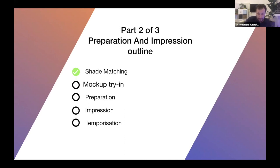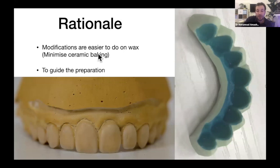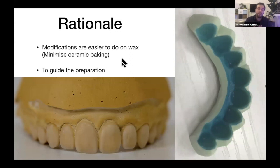Next, the mock-up try-in. Why do we do it? After the digital smile design from the last webinar, we make a wax-up and convert it into a putty because it's easier to make modifications on wax and composite than on ceramic. This effectively minimizes the number of baking cycles for the ceramic, which makes the visual appearance of your ceramics much more appealing. You'll require fewer modifications from your lab technician if you follow these steps. The mock-up on the mouth also guides your preparation, which we'll discuss next.